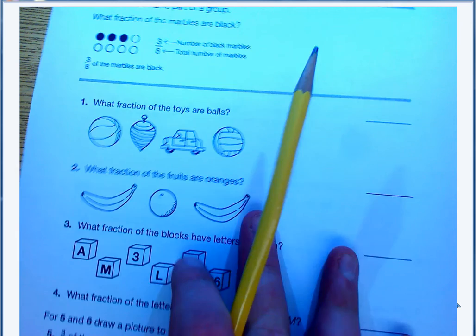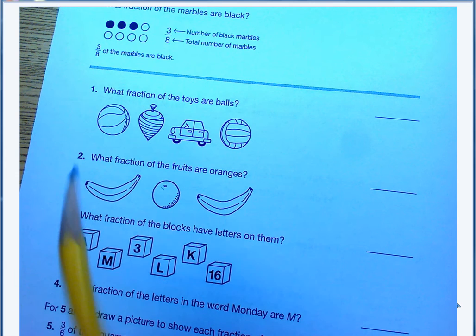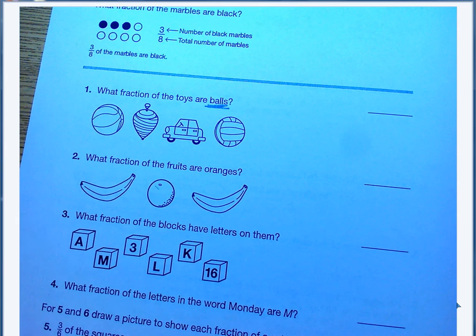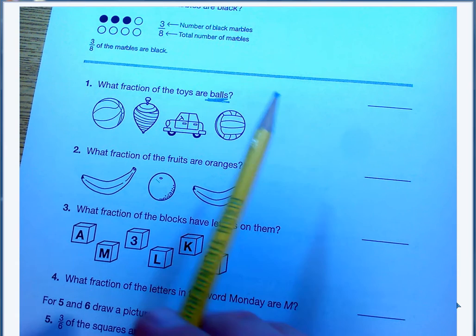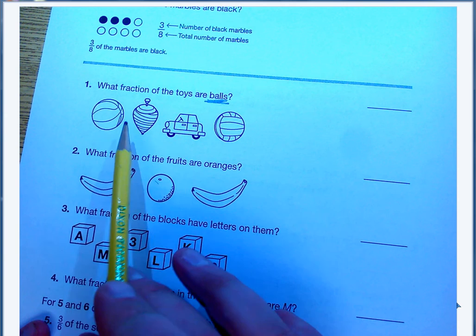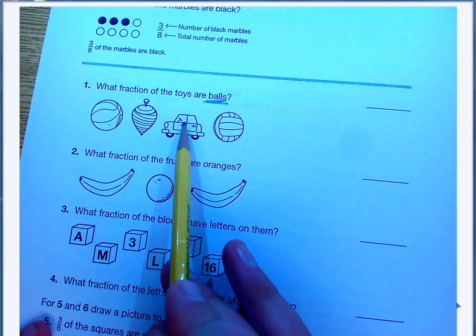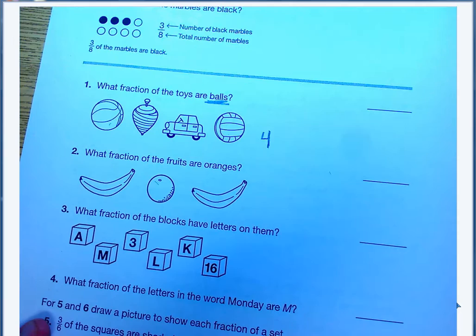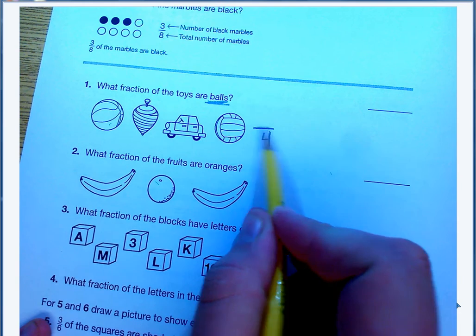Let's take a look at the questions. Number 1 says, what fraction of the toys are balls? That's important, so I'm going to focus on that. I first need to see how many toys I have. 1, 2, 3, 4. So my bottom number, my denominator, is going to be 4 because that's my total number in my set.